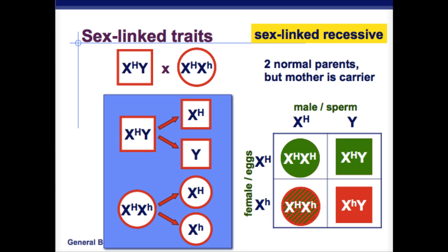Whereas with females, you're going to have two X's. For hemophilia, if you have big H you're not going to be affected. Since it's a recessive trait, you have to have little h present. The male, who's shaded in red on the lower right corner, is affected. Whereas the female, who is big H little h, is going to be a carrier but not affected because the big H dominates over the recessive trait.